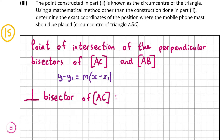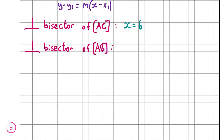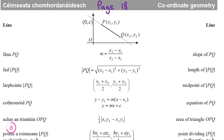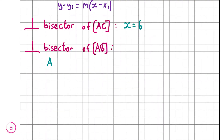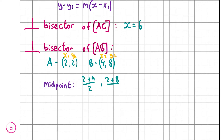The perpendicular bisector of AC is a special case: it's a straight vertical line through the x-axis, so its equation is simply x equals 6 since we can't work out the slope of a vertical line. Now we'll find the perpendicular bisector of AB. First, find the midpoint of AB using the midpoint formula on page 18: x1 plus x2 divided by 2, and y1 plus y2 divided by 2. With A = (2, 2) and B = (4, 8), the midpoint is (2+4)/2 and (2+8)/2, giving us (3, 5). So (3, 5) is a point on the perpendicular bisector of AB.